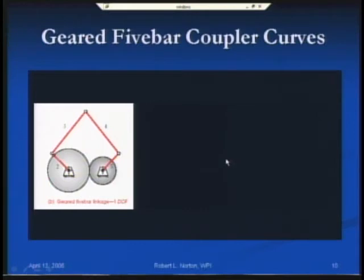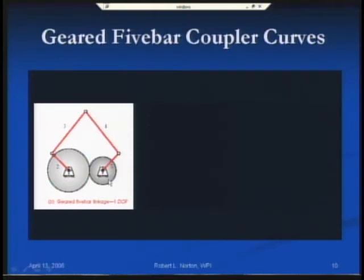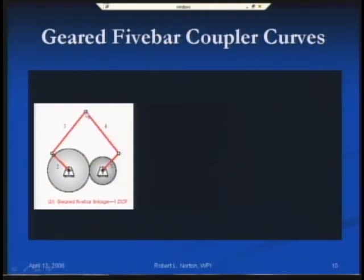Now I'll change focus to geared five-bar linkages. Any linkage generates coupler curves assuming it has a coupler link, so going up the ante to a five-bar: with five bars and five pins you have two degrees of freedom, requiring two inputs. Rather than using two synchronized motors, the simple solution is to connect links 2 and 5 with a pair of gears. Then one motor input causes the other link to follow at whatever gear ratio you provide, and links 3 and 4 are both couplers — giving an infinity of coupler curves off each.